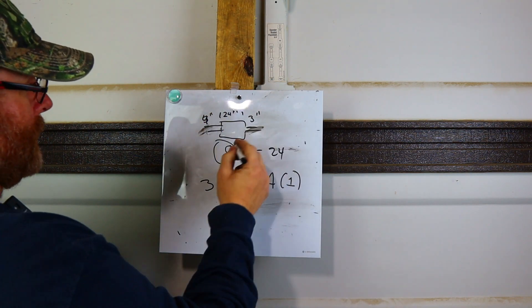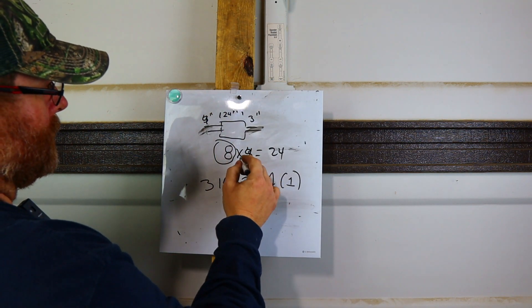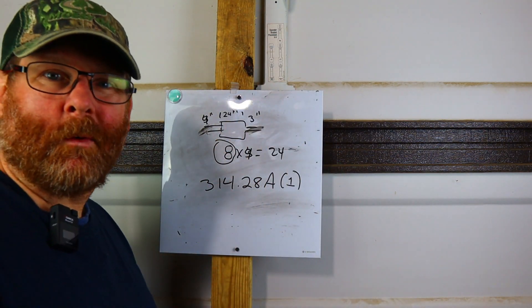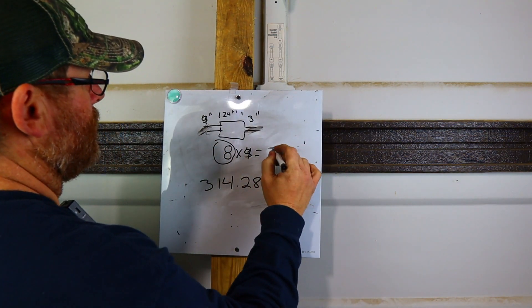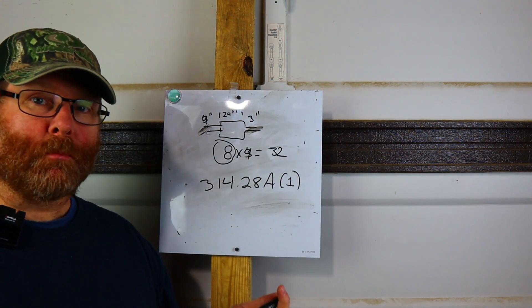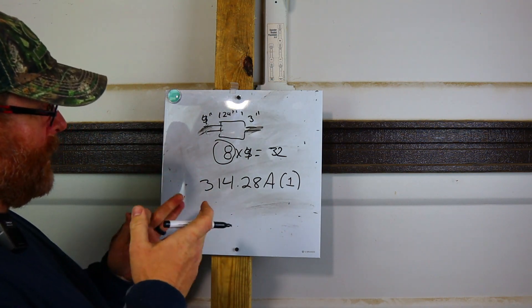So if this was a 4 inch, it'd be 8 times 4. 8 times 4 is 32. So you need a 32 inch box. It's pretty easy.